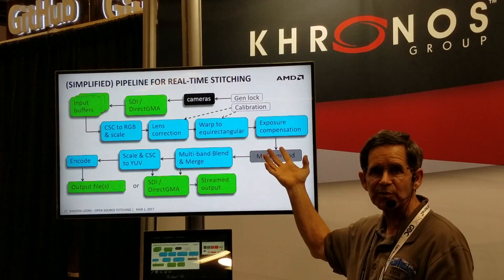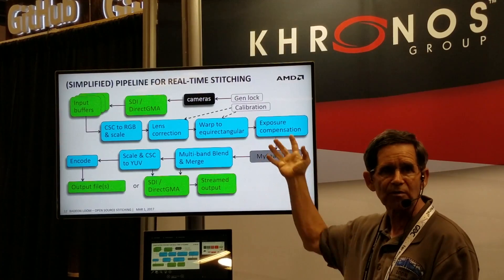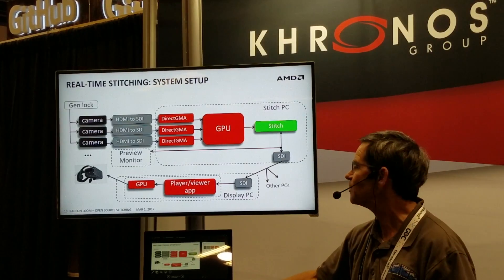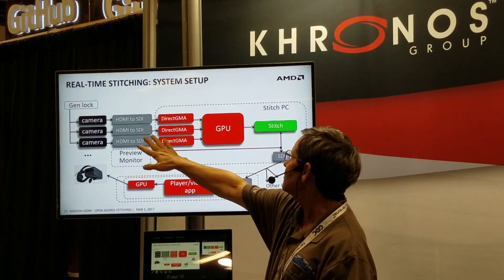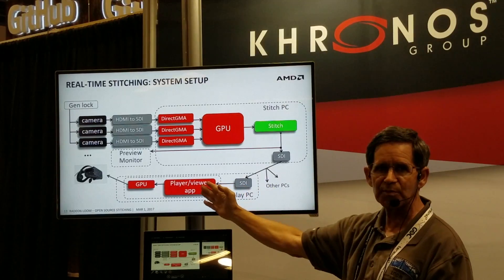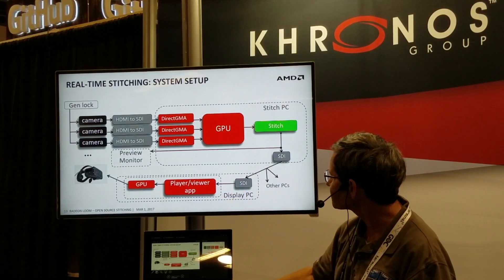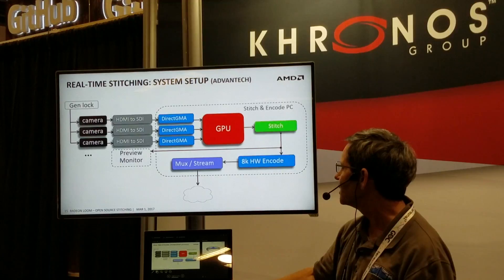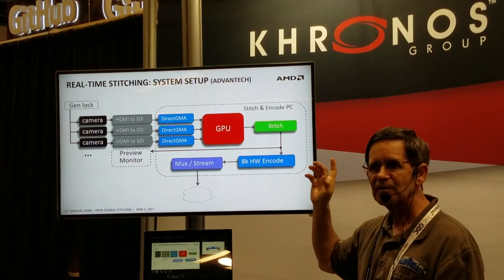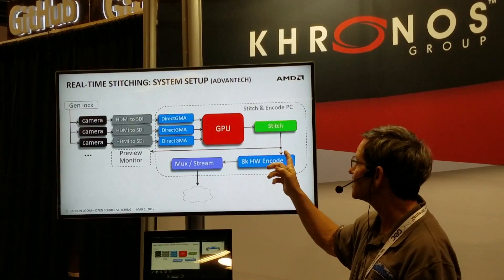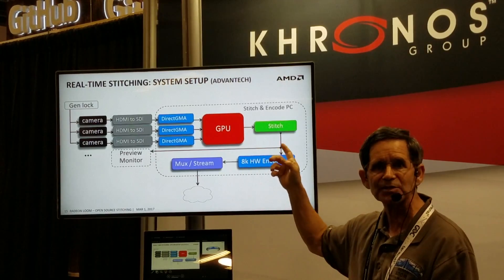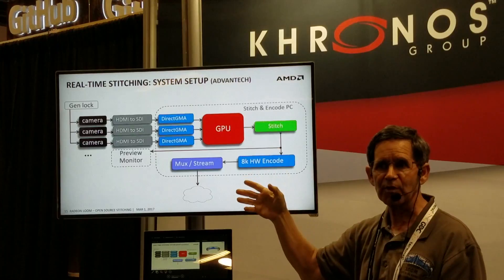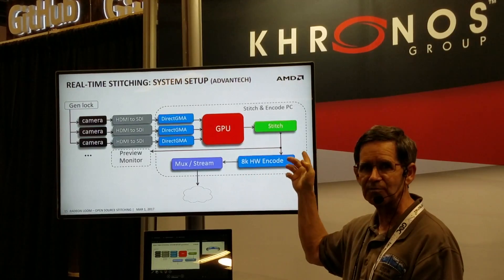And you can replace any of the components with your own — so if you don't like the seam finding we have, you can insert your own component at that point. This is what the actual PC system might look like: you have a whole bunch of cameras, bring them into the graphics chip, stitch it, and send it out to another PC to view it. Alternatively, you can go to the cloud. We have a partner we're going to be demonstrating in a couple of months where we can actually do 8K stitching — 4K is sort of the normal now, and going beyond 4K is much more difficult.